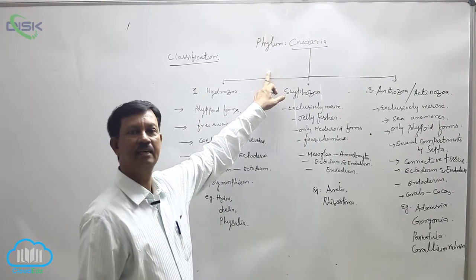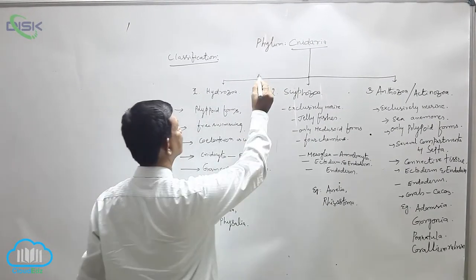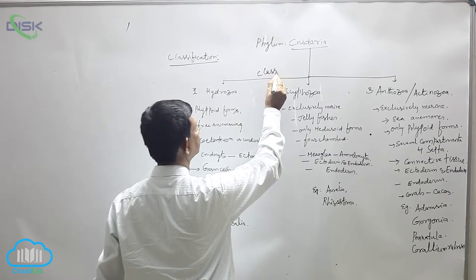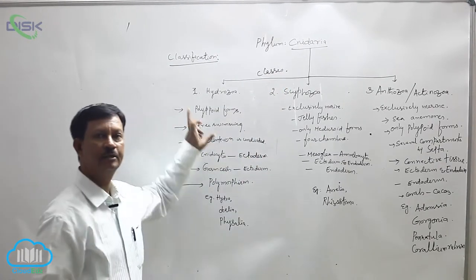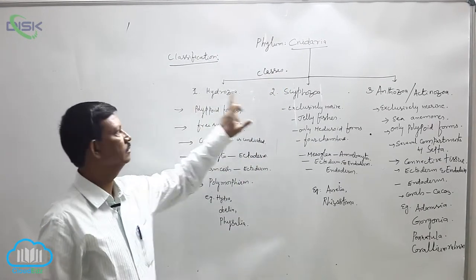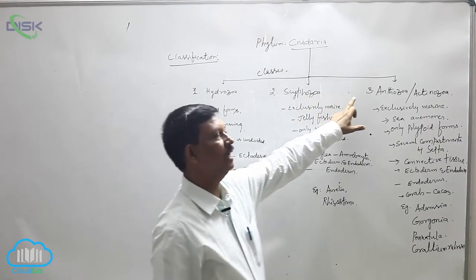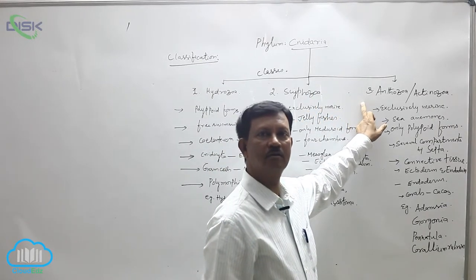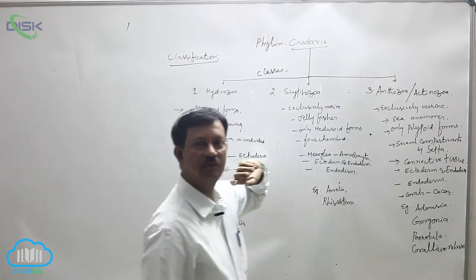Phylum Cnidaria is divided into three classes: Hydrozoa, Scyphozoa, and Anthozoa. Anthozoa is also known as Actinozoa.